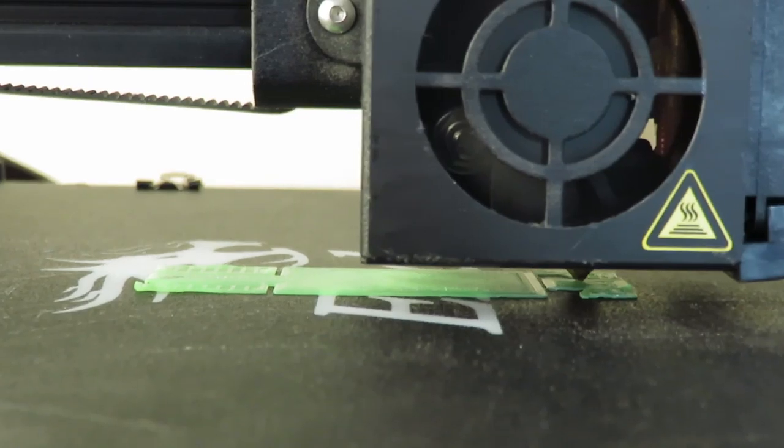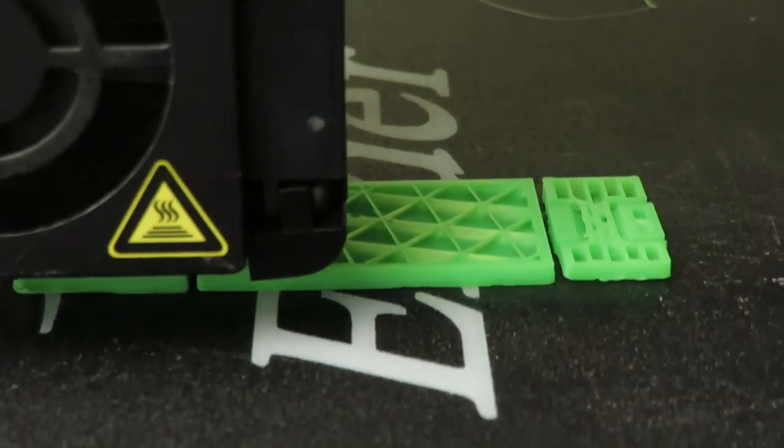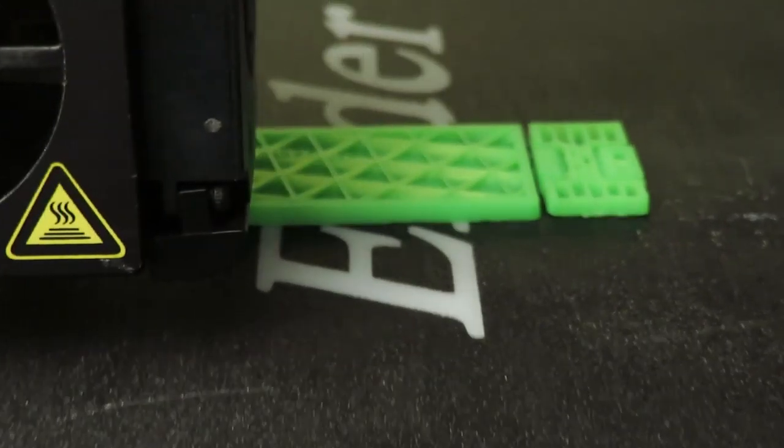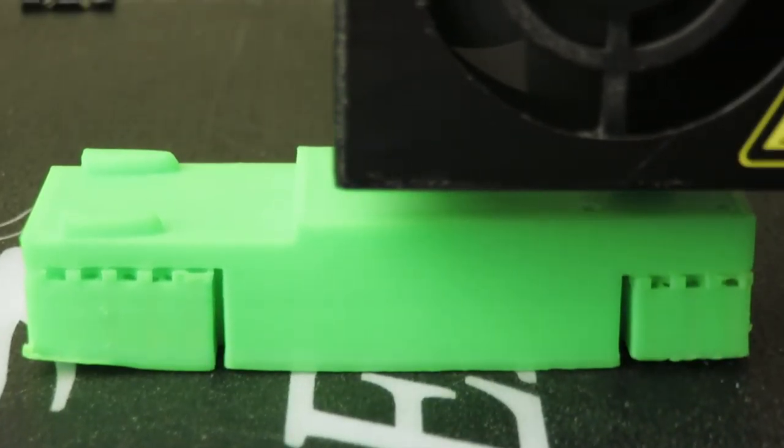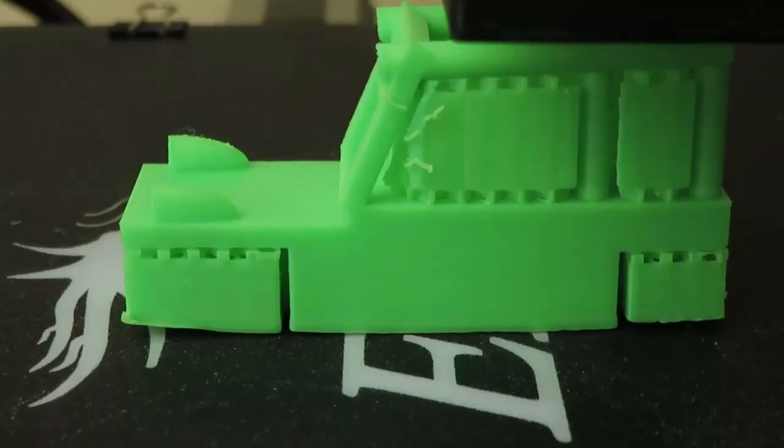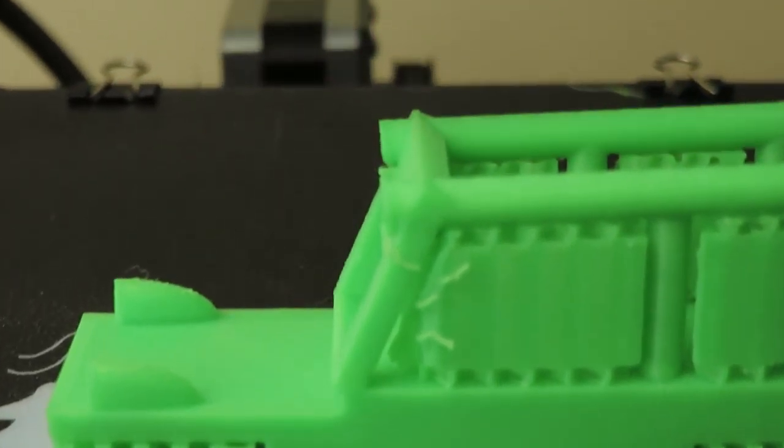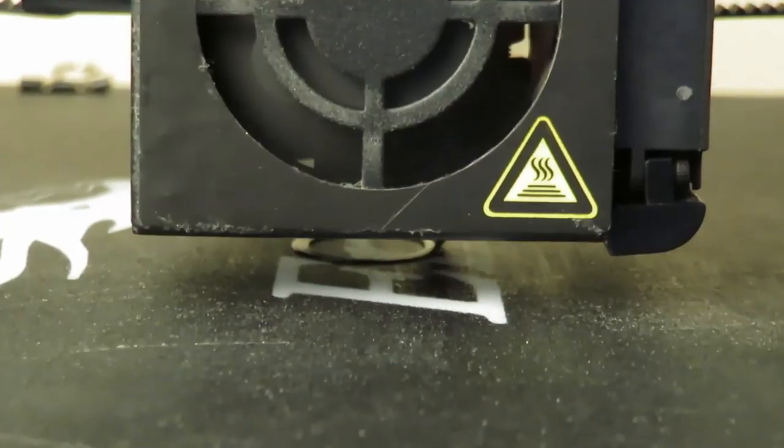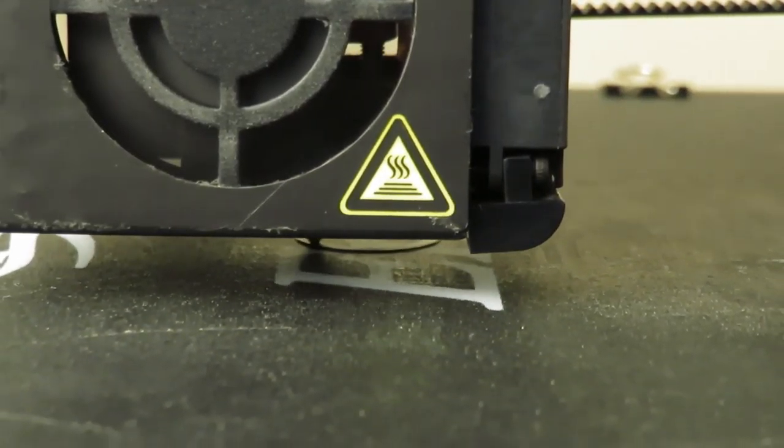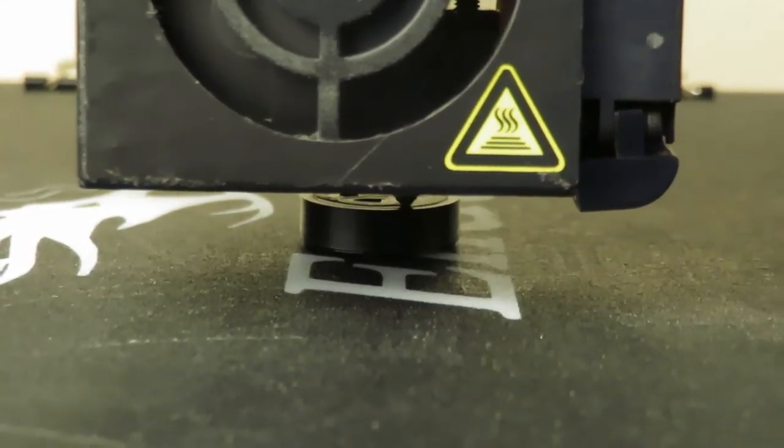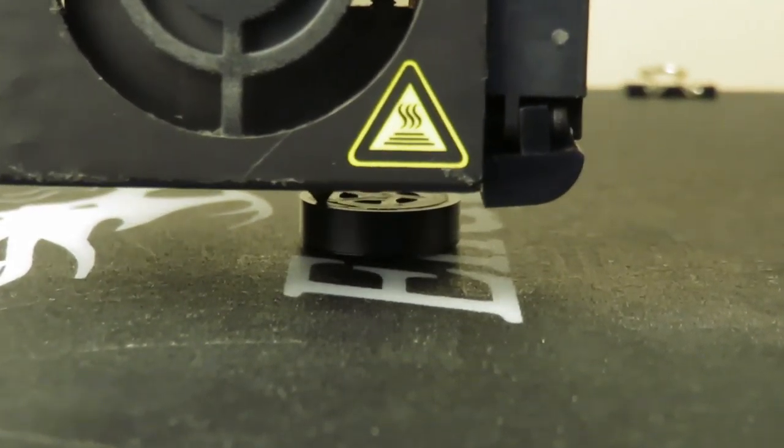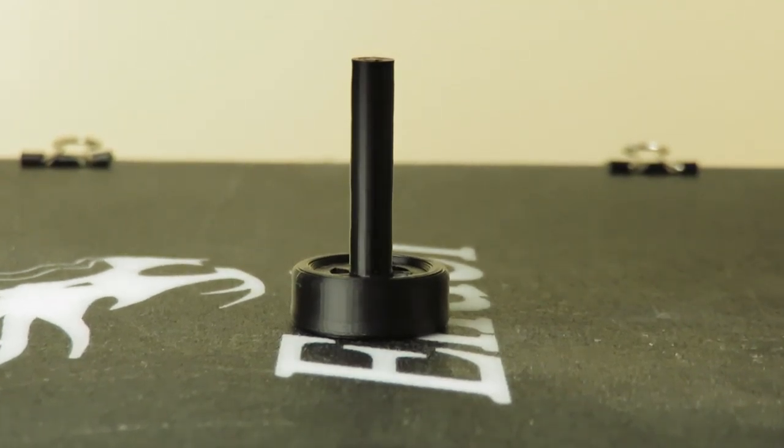I used green filament to print the body and it took 4 hours. Using black filament, it took 20 minutes per wheel and 10 minutes per axle. Here is the final result.